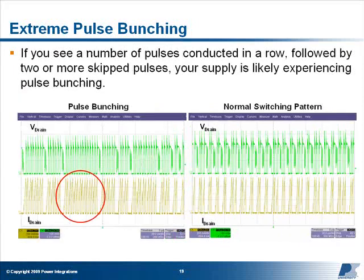On this slide, the switching waveform on the left exhibits extreme pulse bunching. The switching waveform on the right shows a more normal switching pattern where the conducted and skipped cycles are more or less evenly distributed.